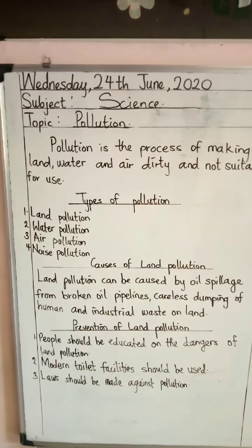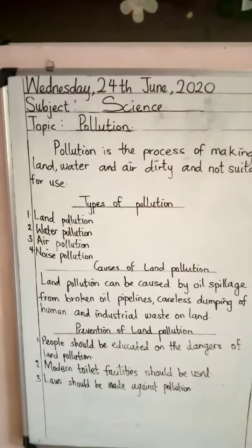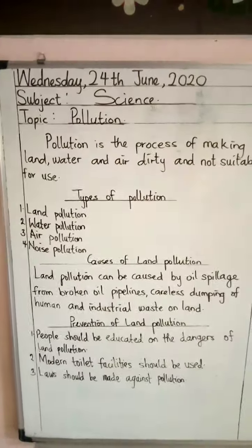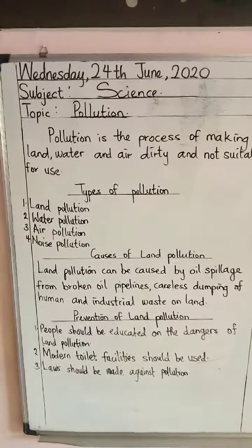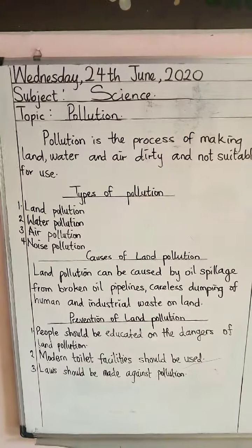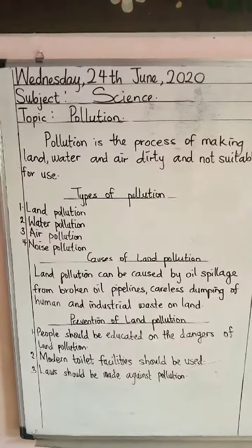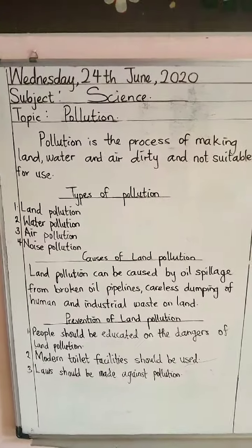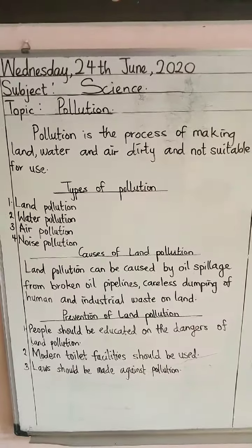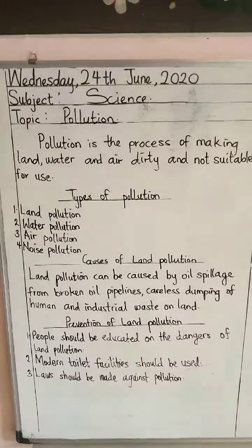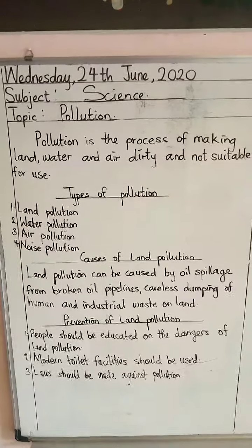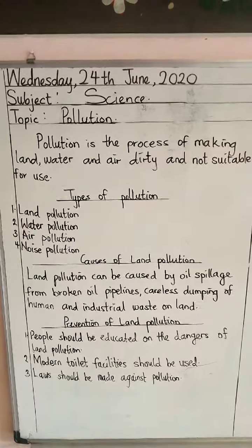Industrial waste on land also has a way of contaminating your land. If you dump waste from industries and factories, that waste can also spoil or contaminate your land, thereby making it not suitable for use, most especially when it comes to planting.